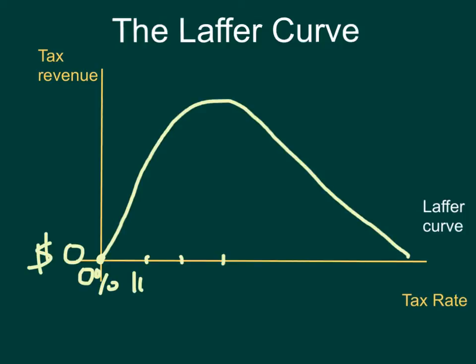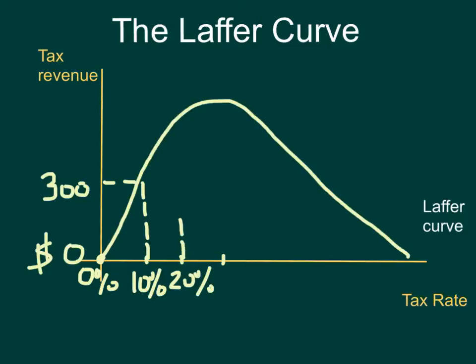Let's say the tax rate goes up to about 10%. The tax rate is still pretty low, a lot of people are working, and the government sees an increase in total tax revenue received — let's say $300 billion. At 20%, the rate is still relatively low, there are lots of jobs, and because the tax rate is higher, the government receives more money, let's say $500 billion.